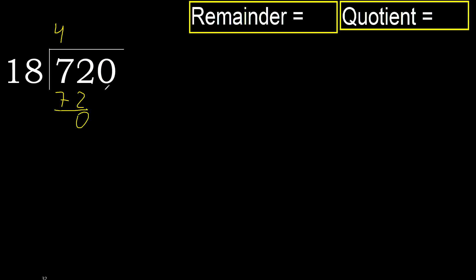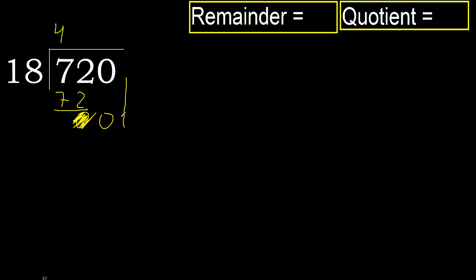Subtract, then next. Eliminate 0 on this side. 0, but 0 is less, therefore next — that is not a number, therefore finish it. Finish it with this number. Therefore here complete — always complete with 0.